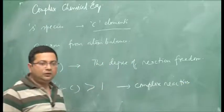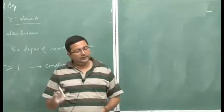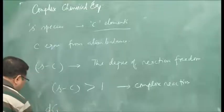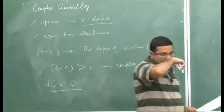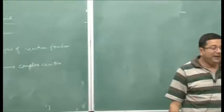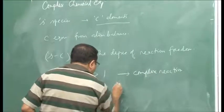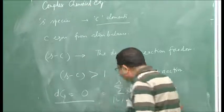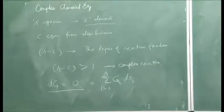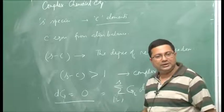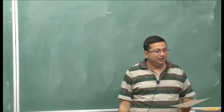For any reaction, whether simple or complex, we have seen that at equilibrium dG = 0. If we have S species, the total dG is the sum over all species of the molar Gibbs free energy times the change in number of moles of that species, and this equals zero at equilibrium. We will use this relationship to obtain the equilibrium relations. Let us start with an example.